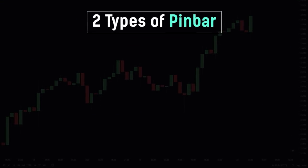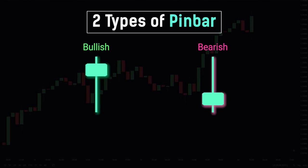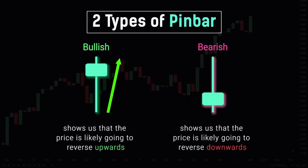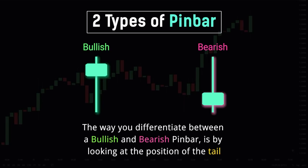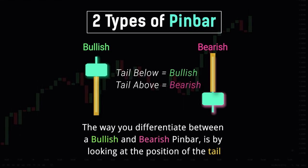There are two types of pin bar patterns that exist: the bullish pin bar and the bearish pin bar. A bullish pin bar shows us that the price is likely going to reverse upwards, while the bearish pin bar shows us that the price is likely going to reverse downwards. The way you differentiate between a bullish and a bearish pin bar is by looking at the position of the tail itself. If the tail is below the candle, then it will always be a bullish pin bar. And if the tail is above the candle, then it will always be a bearish pin bar.